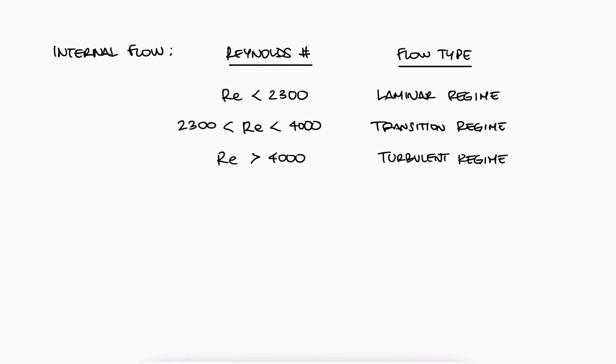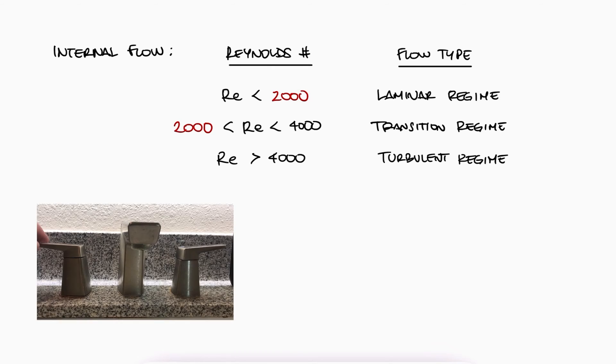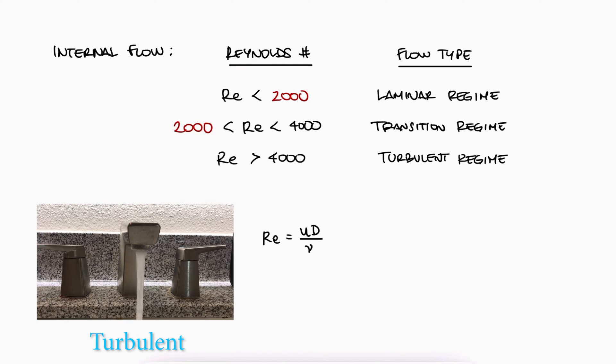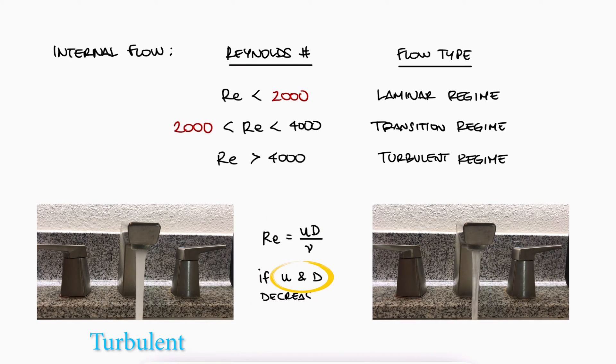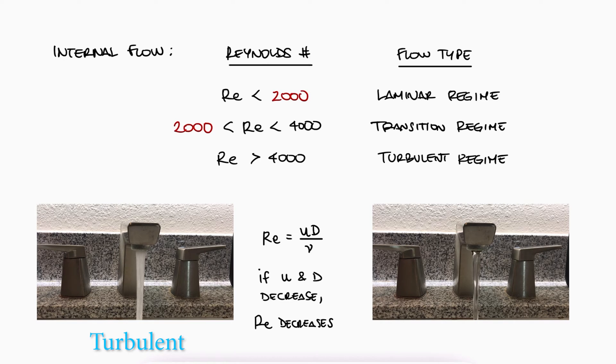This works well even for a water faucet in our bathroom sink. When we let the water run at maximum speed, the flow is turbulent. When we partially close the faucet, the velocity and diameter are both reduced. Since the kinematic viscosity didn't change, the Reynolds number decreased, and we achieved a laminar flow regime.